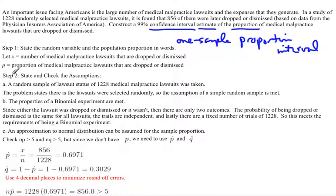So the first one would be that a random sample of lawsuit status was taken, because what we actually did was take each lawsuit and determine if it was dropped or not. So we put them into a status category. So we actually measured the status of each lawsuit of the 1,228 medical malpractice lawsuits. I notice that the problem actually says that we were randomly selected. So the assumption of a simple random sample is, in fact, met.